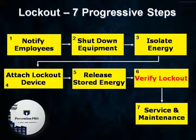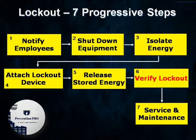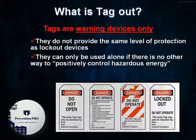Lockout has seven progressive steps: notify employees, shut down equipment, isolate energy, attach lockout device, release stored energy, verify lockout, then perform service and maintenance.